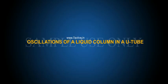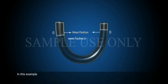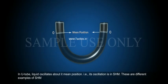Oscillations of a liquid column in a U-tube. In this example, in U-tube, liquid oscillates about its mean position, that is, its oscillation is in SHM.